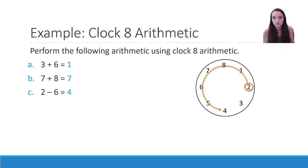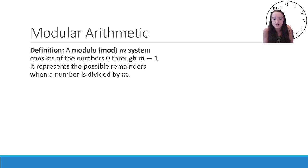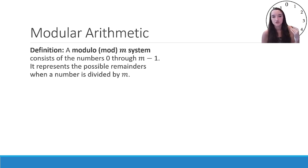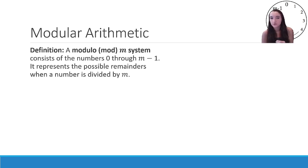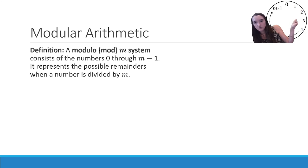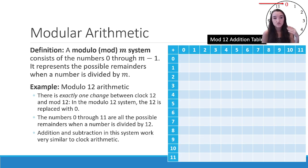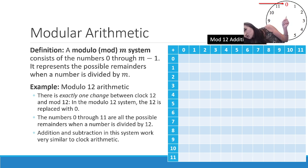Now we get into the name of this section: Modular Arithmetic. Modular arithmetic is very related to clock arithmetic — they get easily confused — but there's one major difference. A modulo m system consists of the numbers 0 through m minus 1. This new clock starts at 0, going 0, 1, 2, 3, 4, 5, up to 1 less than the given number, instead of starting at 1 and going up to N.